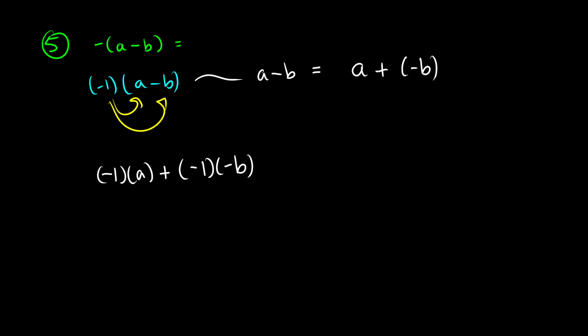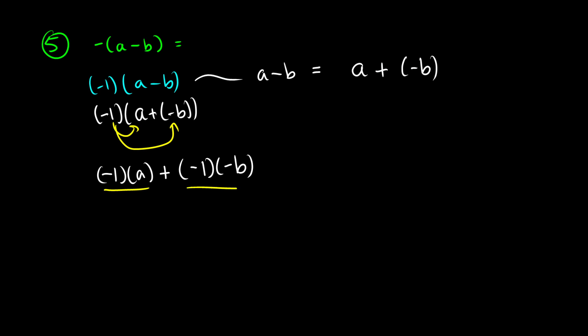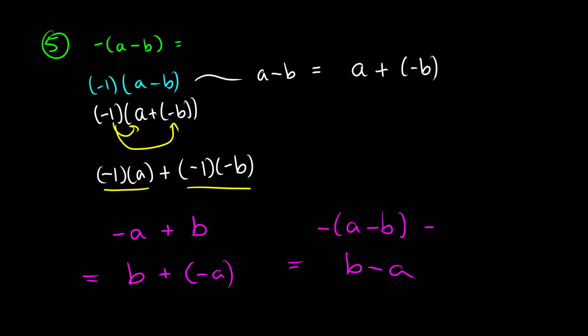Another way of looking at this: we have negative 1 times (a plus negative b). When we distribute, we get negative 1 times a plus negative 1 times negative b. On the left we get negative a, and on the right the two negatives cancel out, leaving just b. So we end up with negative a plus b, which by commutativity is b plus negative a, which equals b minus a. So negative (a minus b) is the same thing as b minus a — you can think of it as flipping which one is being subtracted.